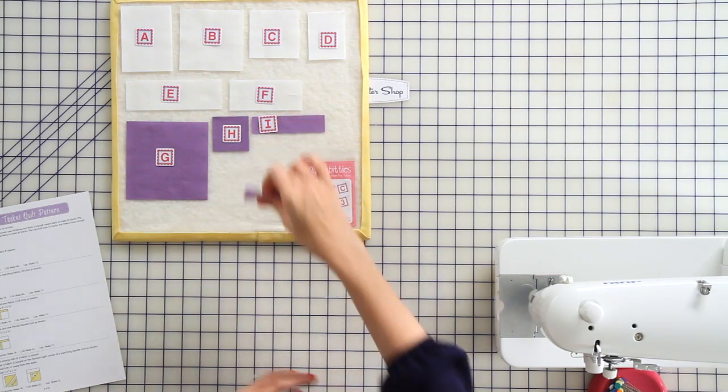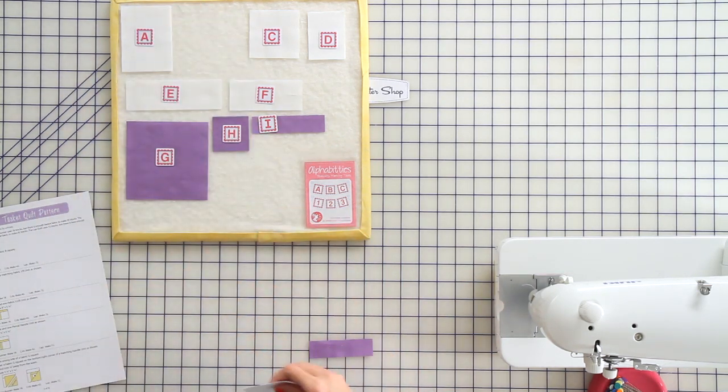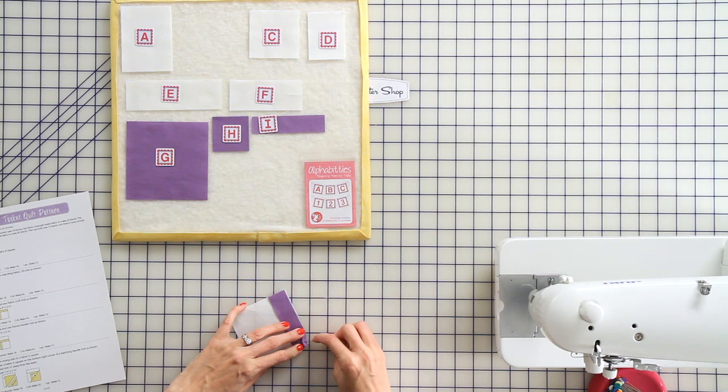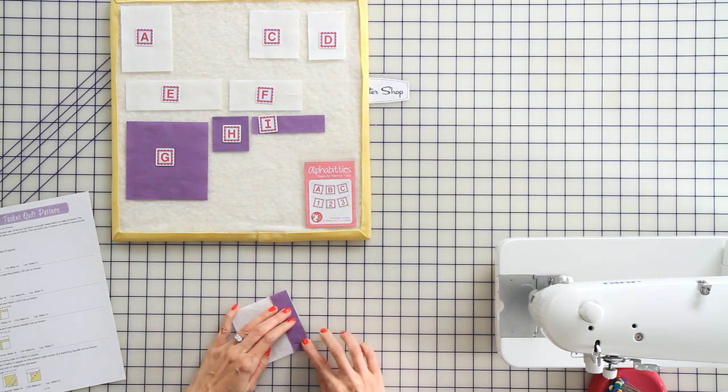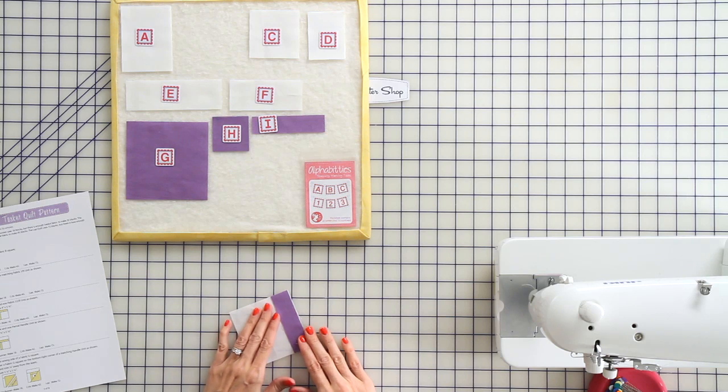Let's start with a fabric J rectangle and a fabric B square. We're going to put the fabrics right sides together and pin at the very end, and then we're going to go to our sewing machine. We're going to use a 2.0 stitch length, a coordinating thread, and a 1/4 inch seam allowance.